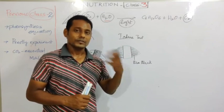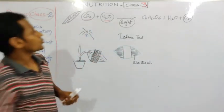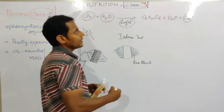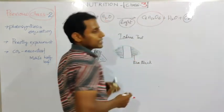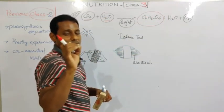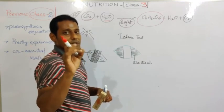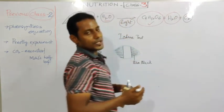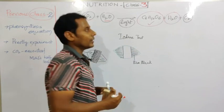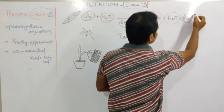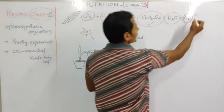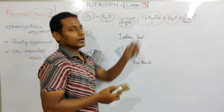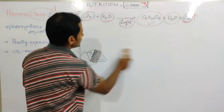Now we have proved carbon dioxide is essential, water is essential, and light is essential for photosynthesis. The next experiment is to test for glucose - the product of photosynthesis. We test for starch or glucose using the iodine chemical. If starch or glucose is present in the leaves, it turns blue-black in color. One more point remaining is that oxygen is liberated during the photosynthesis process, which is shown in the chemical equation.